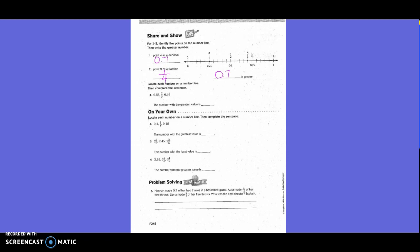Locate each number on the number line and then complete the sentence. So 55 hundredths, where would that be? One tick mark right after 5 tenths. So there's 55 hundredths.